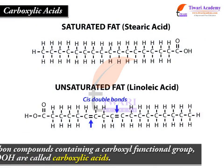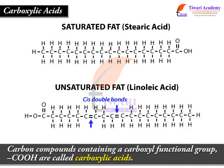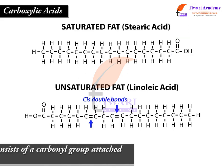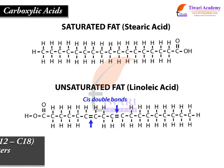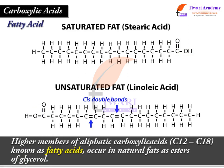Carboxylic Acids. Carbon compounds containing a carboxyl functional group, COOH, are called carboxylic acids. The carboxyl group consists of a carbonyl group attached to a hydroxyl group. Higher members of aliphatic carboxylic acids, C12 to C18, known as fatty acids, occur in natural fats as esters of glycerol.